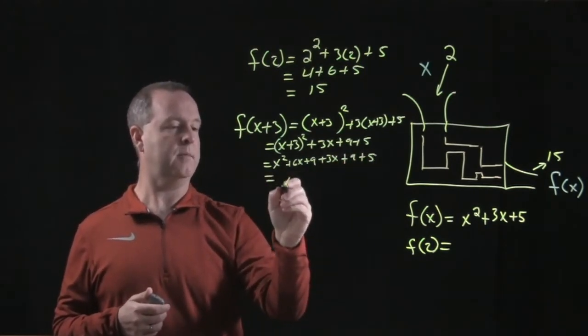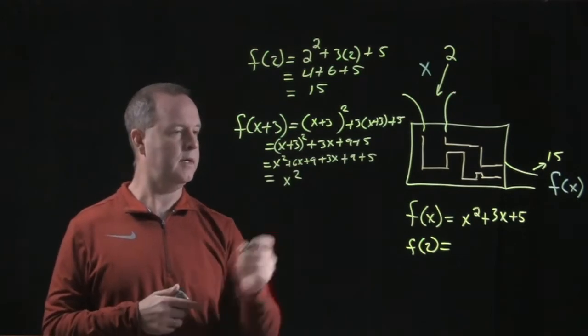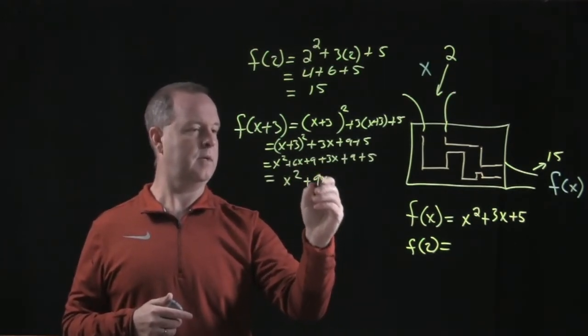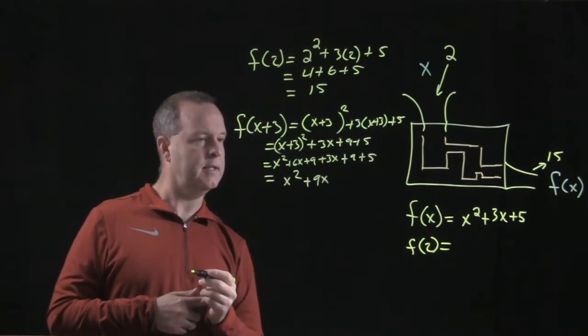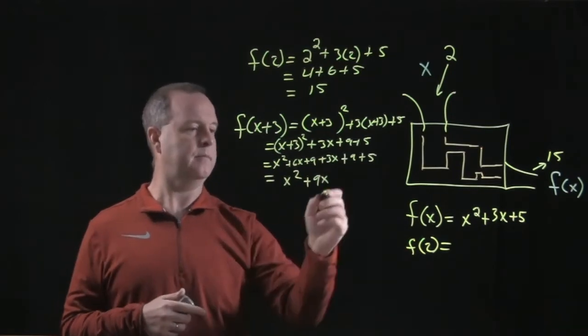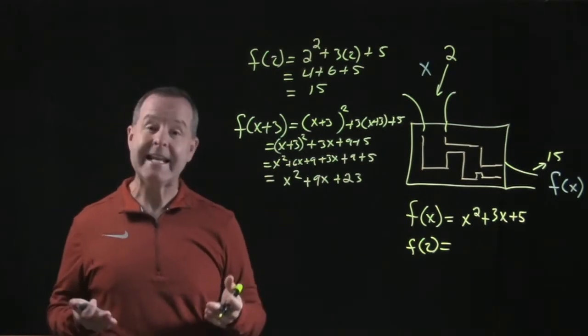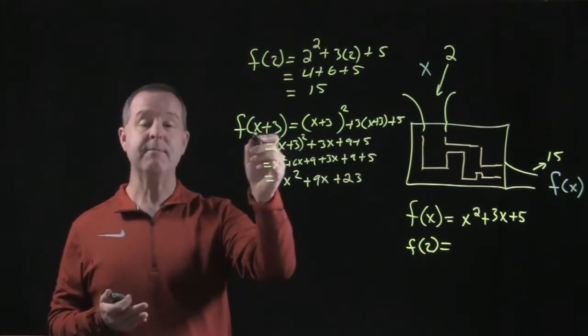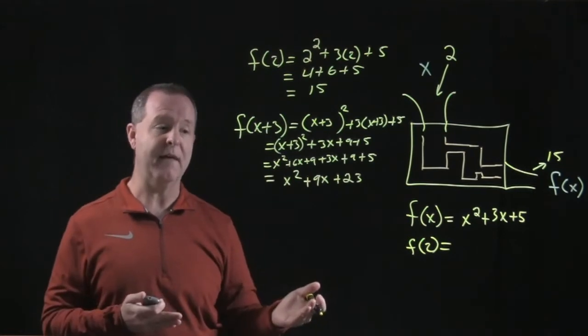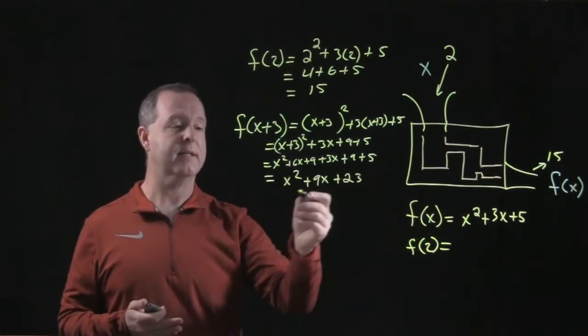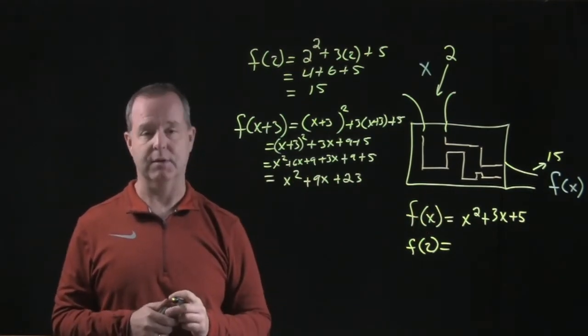Collect all my terms. x squared, plus 9x, plus 23. So when I put into this function the statement x plus 3, the result of that function, my f of x, is x squared, plus 9x, plus 23.